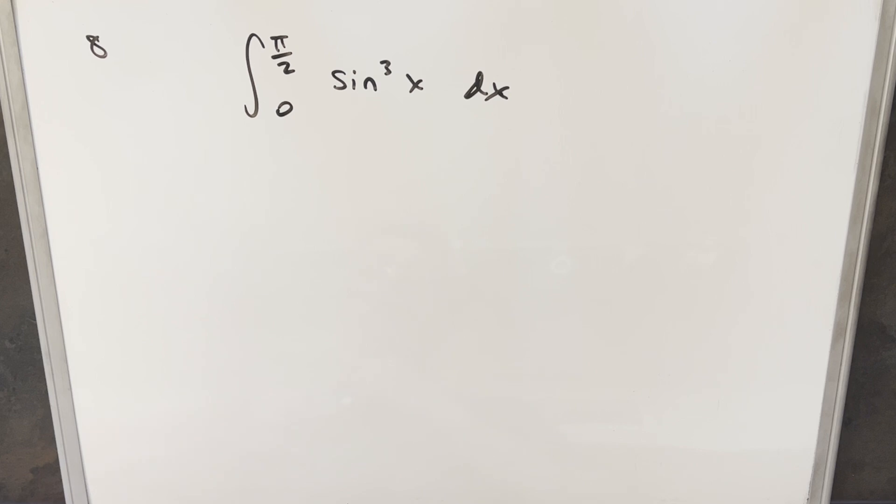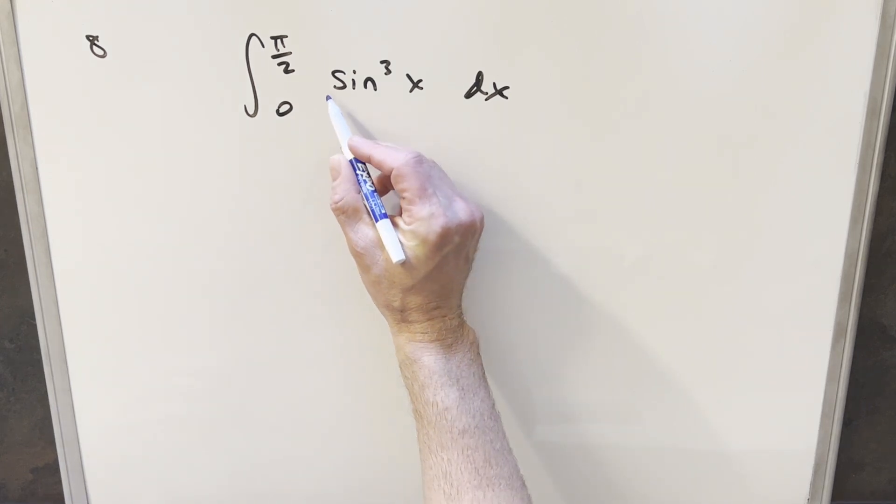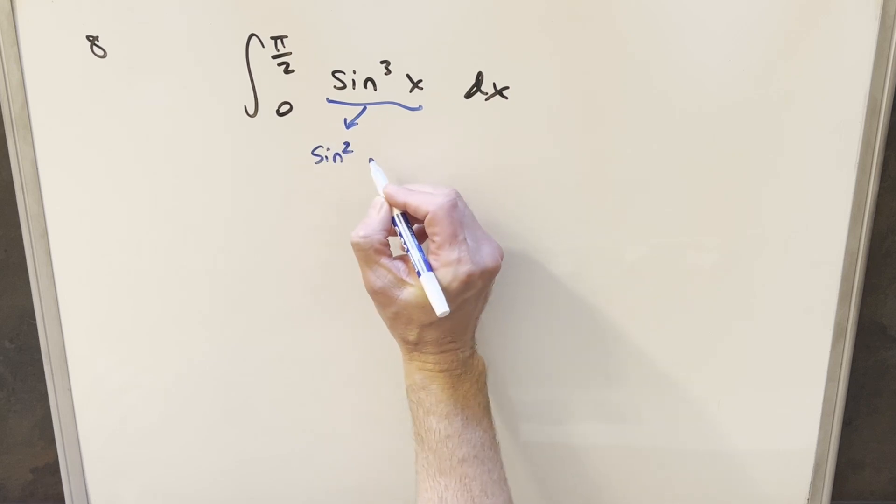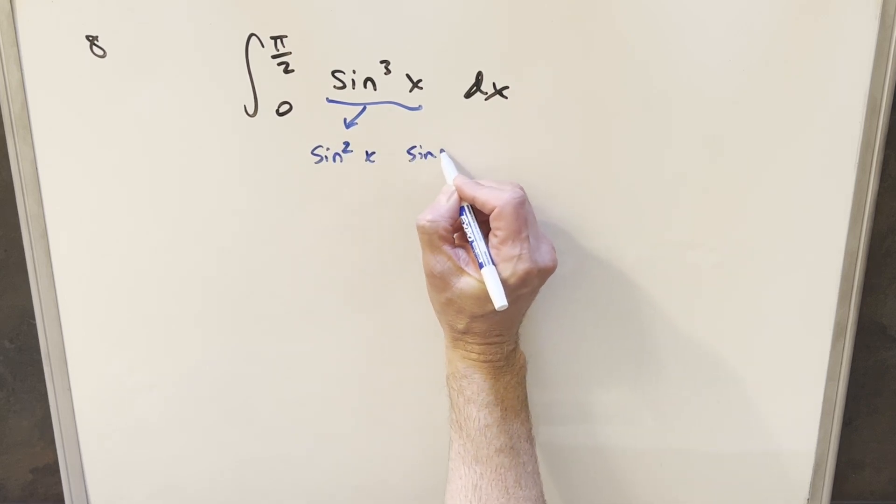I'll do some straightforward things on this. Taking sin³x here, I'm going to split this up. I can write this as sin²x times sin x.